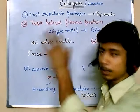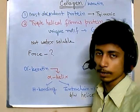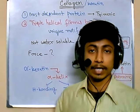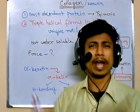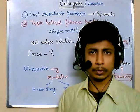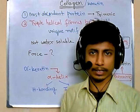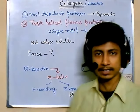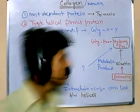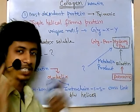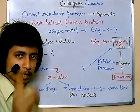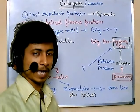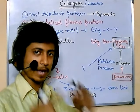Let's begin with collagen, which is the most abundant protein in our body. Collagen is found in almost every tissue — that's why it's the most abundant protein in the human body. This protein is a trimeric protein, meaning three different peptide chains are produced and they wrap around each other to form a helical structure.